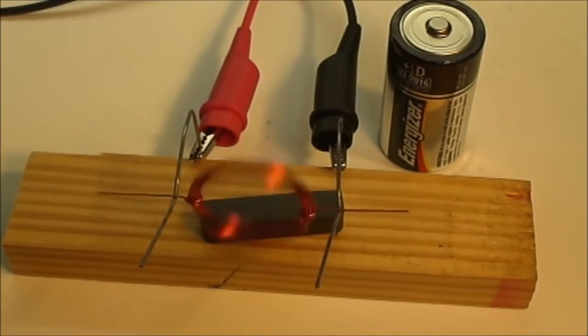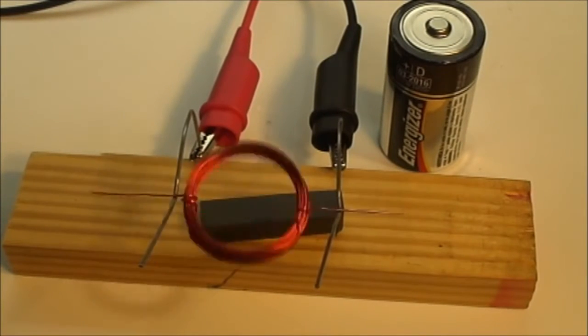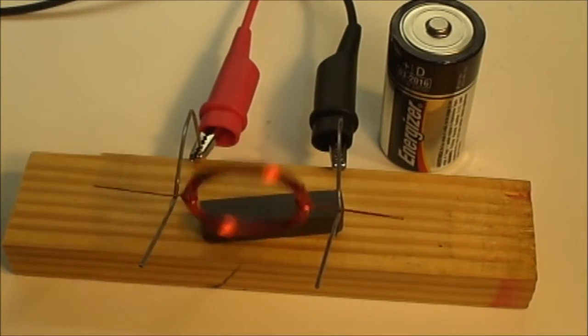Now I'm slowly increasing the voltage, which is going to increase the strength of the magnetic field in the coil. As that strength increases, we're going to see more power coming from the motor and it'll continue to start to speed up in rotations.